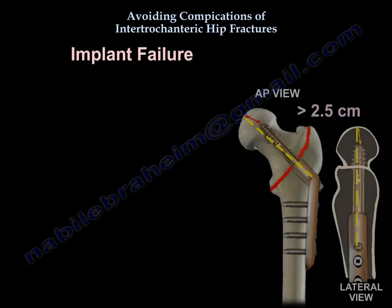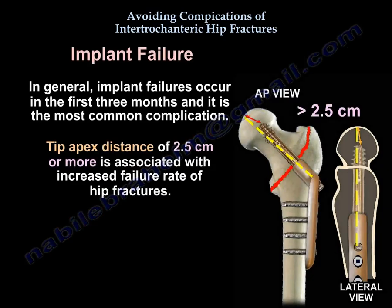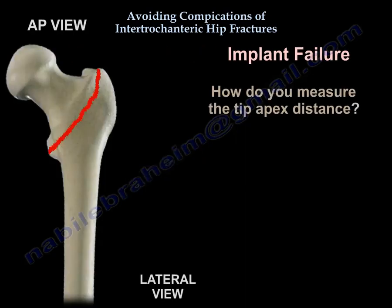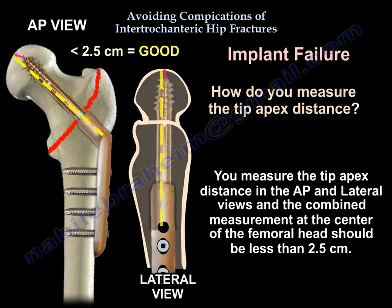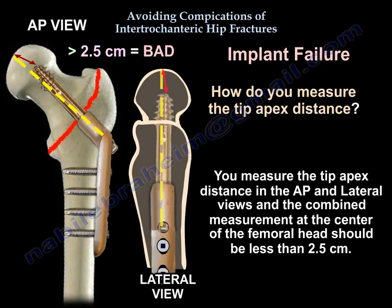Implant Failure. In general, implant failures occur in the first three months and it is the most common complication. A tip apex distance of 2.5 cm or more is associated with an increased failure rate. The tip apex distance is measured at the AP and lateral views, and the combined measurement at the center of the head should be less than 2.5 cm.